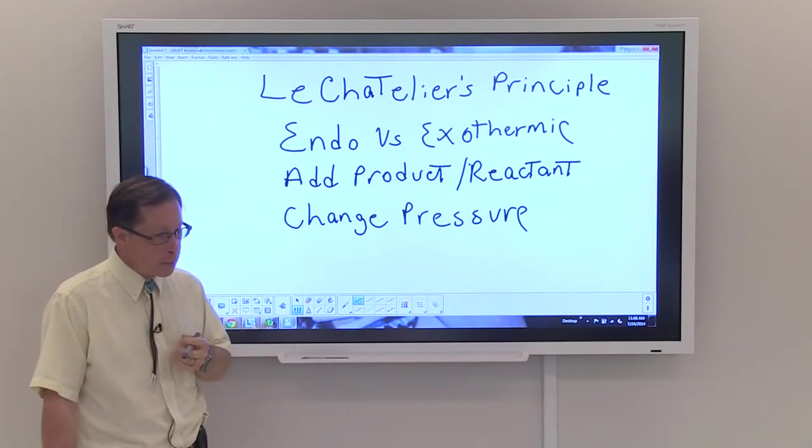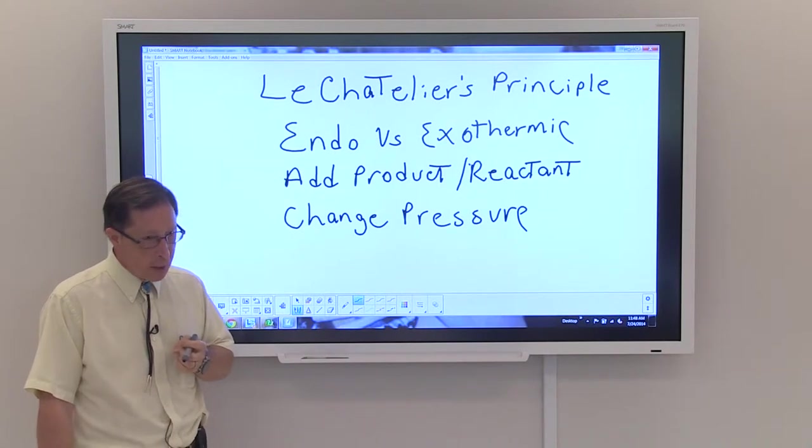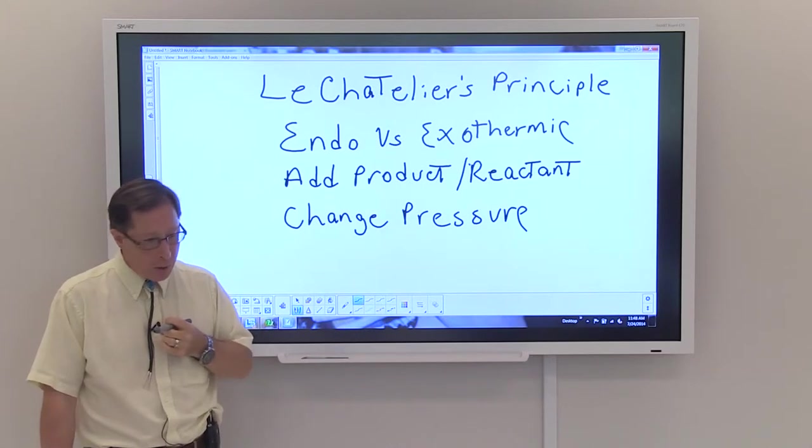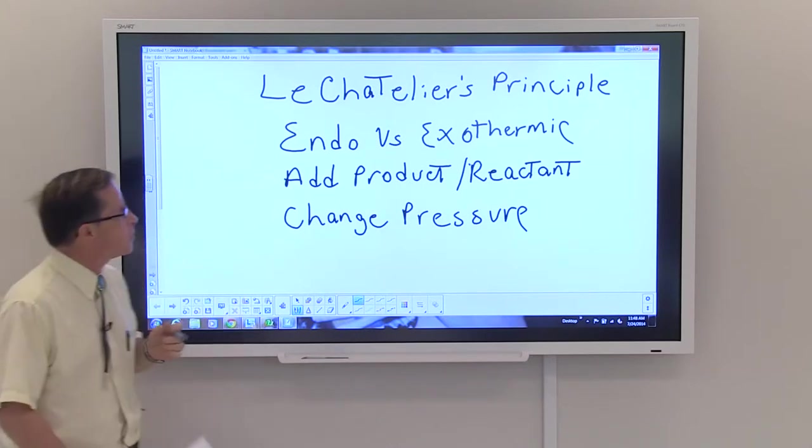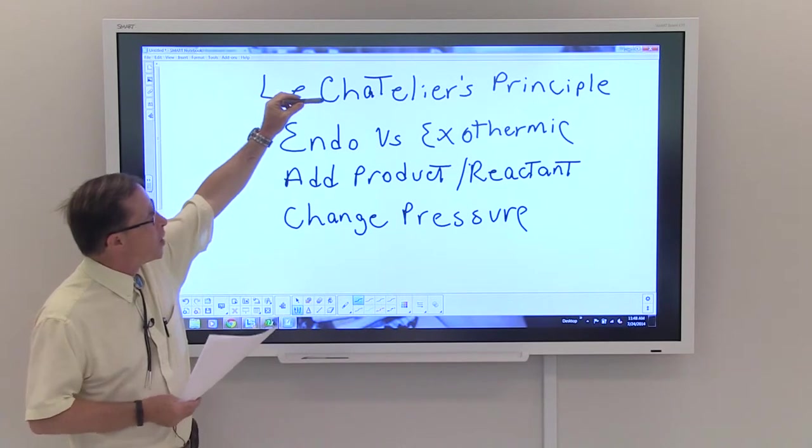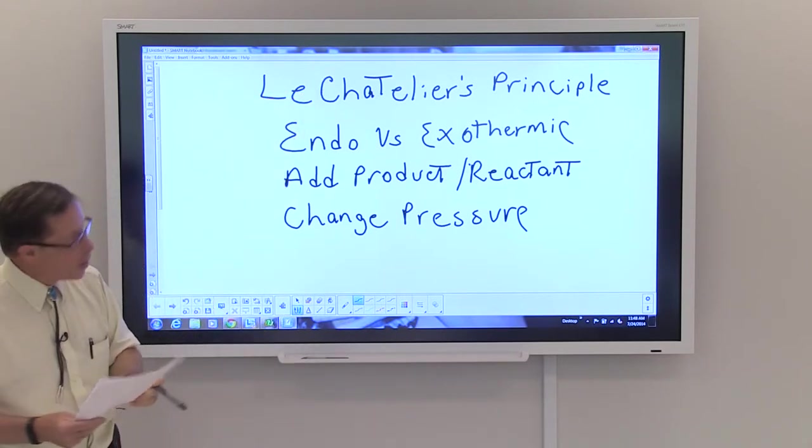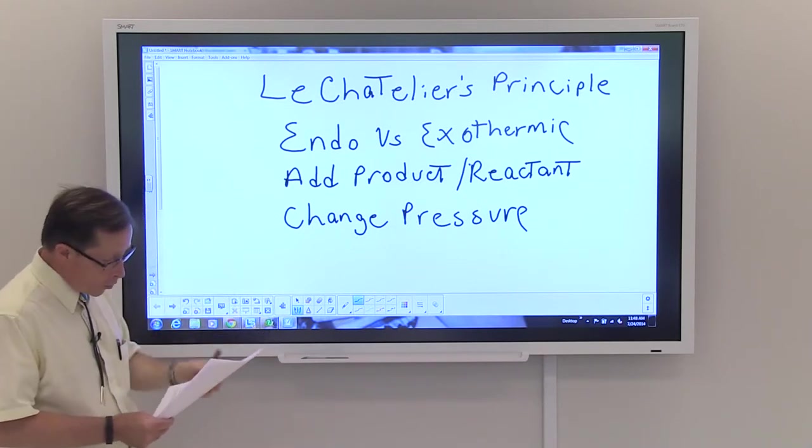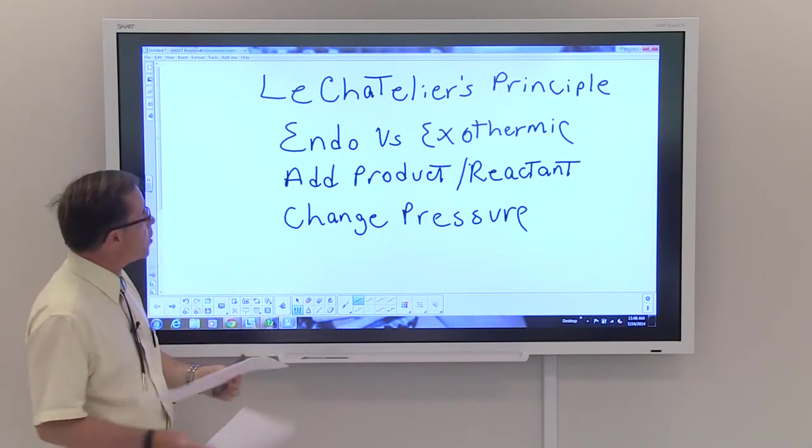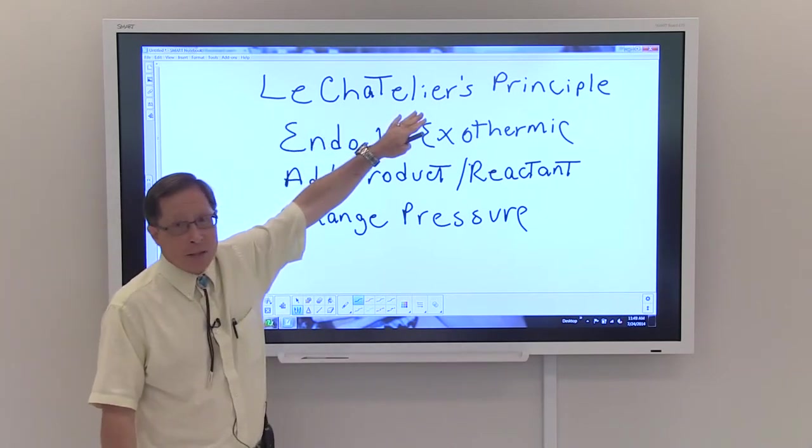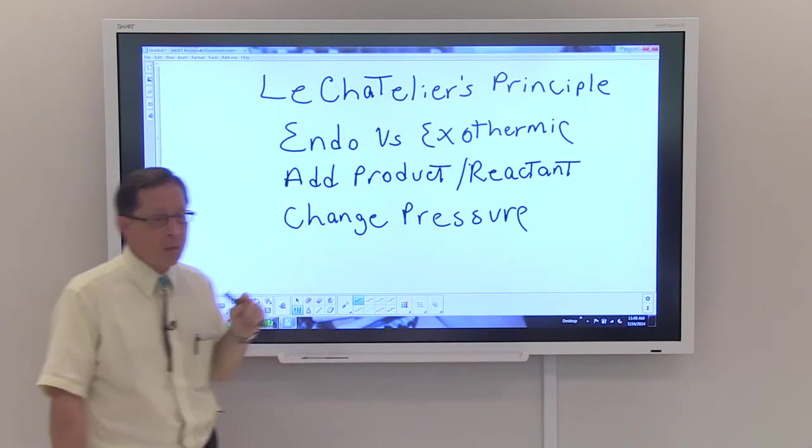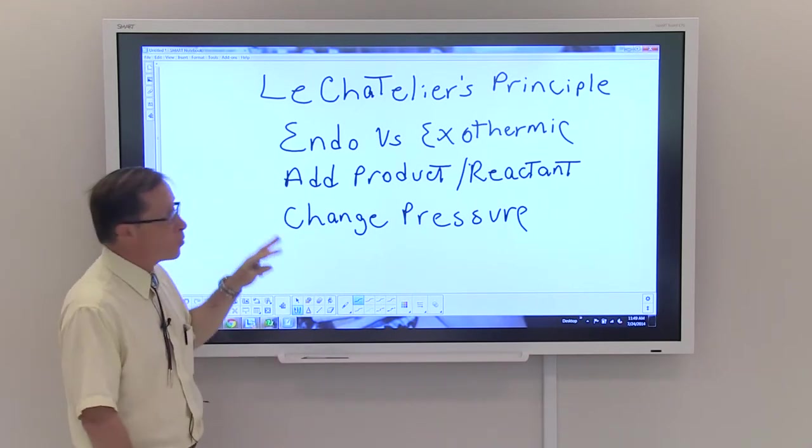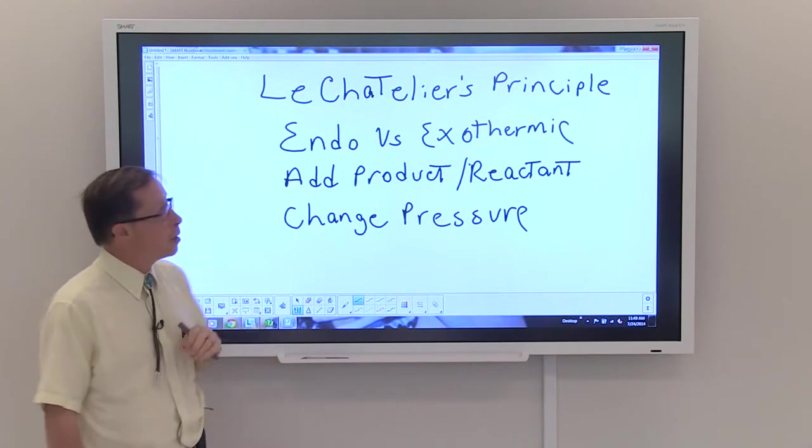Now, how was this process made efficient? How did the Haber process become something that could be used? Well, it has to do with Le Chatelier's principle. And I'm sure I didn't say that correctly, but that's Le Chatelier. His principle says that when there is a stress exerted on a system at equilibrium, the system will shift in such a way as to relieve the stress.